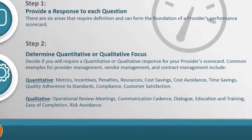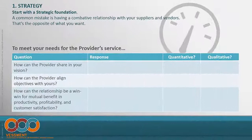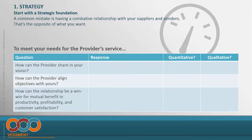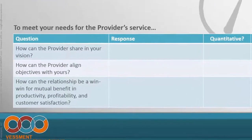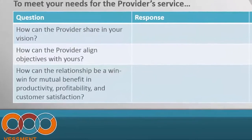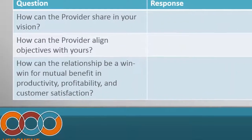By outlining these performance areas, it's ultimately going to help you be better. In the first area around strategy, you really have to start with this as a foundation. It's so common to have an us-them mentality, and that creates a combative relationship with your suppliers and vendors — the opposite of what you want. Embrace them as partners, because partners want to reciprocate in goal sharing and help you achieve your own success. Ask yourself: for what you're trying to get from the provider, how can they share in your vision and align their objectives with yours?